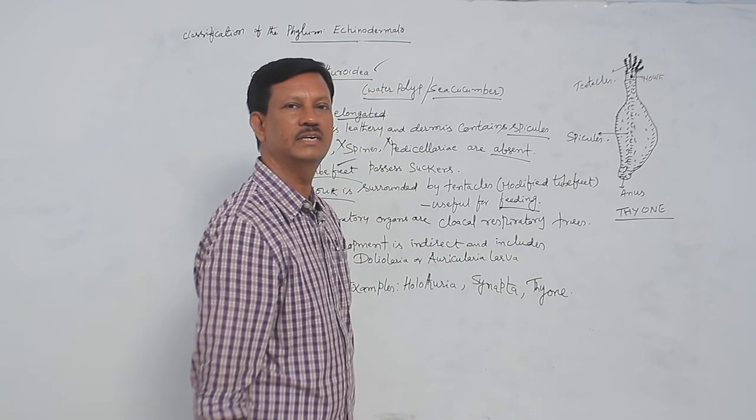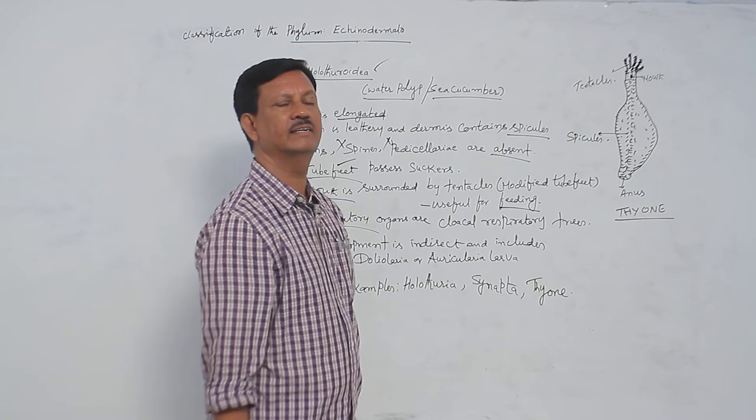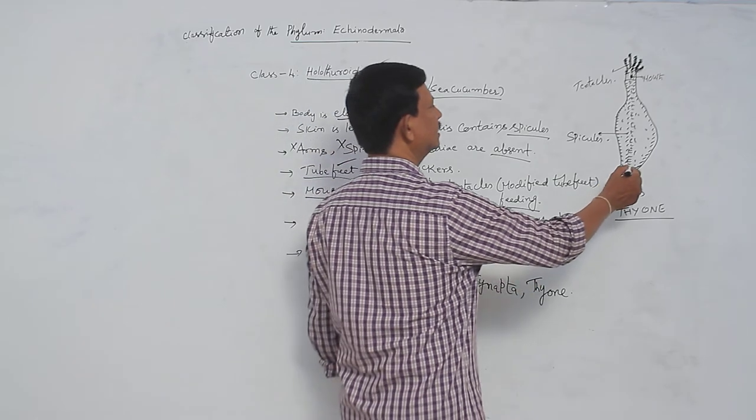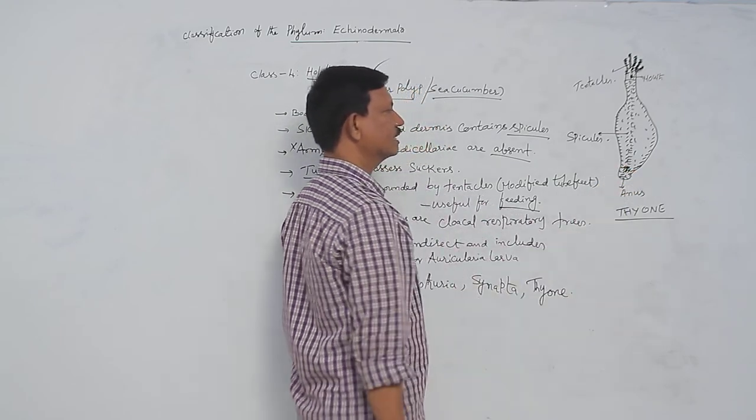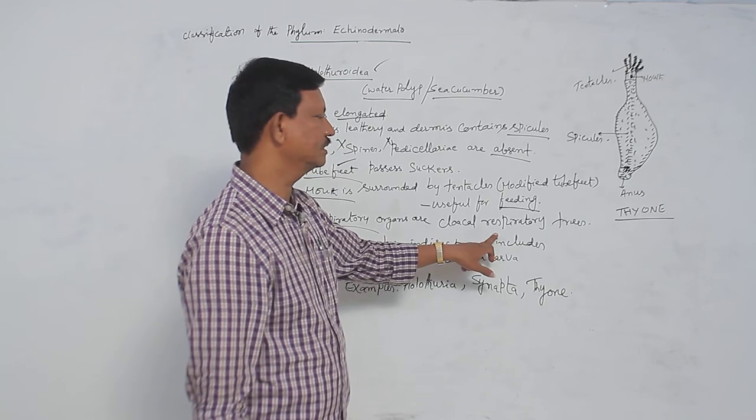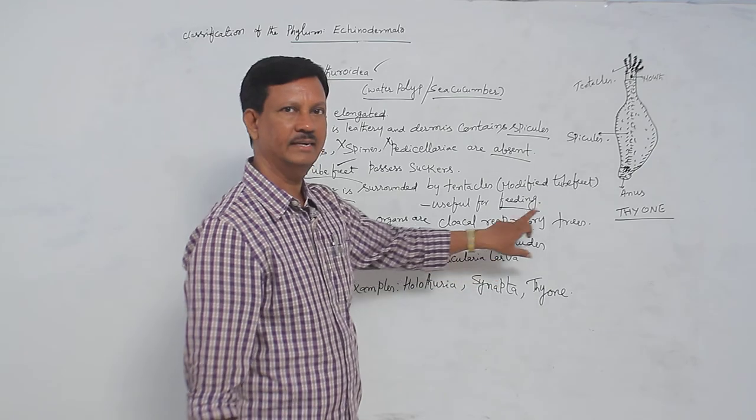Useful for feeding and respiratory organs. These are aquatic animals. Generally gills are present, but here at the posterior region of the body, some special structures are present. They resemble a tree and help in respiration. That is why they are known as cloacal respiratory trees.